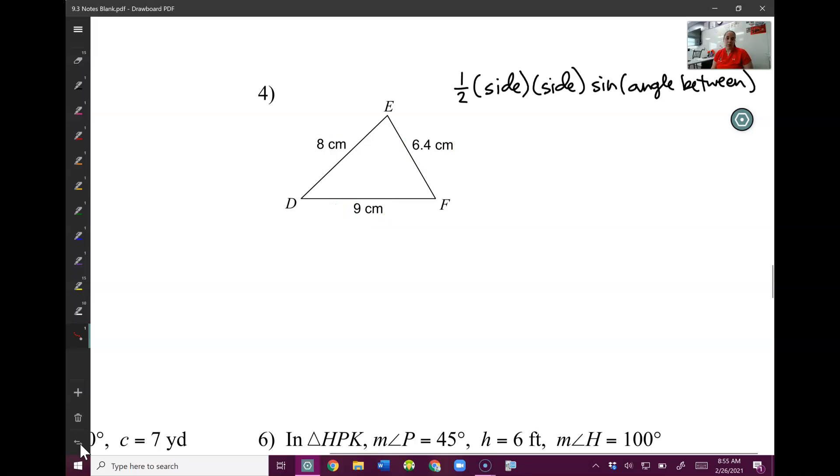Anytime you have all three sides, that should immediately tell you this is a law of cosines problem. We remember if law of cosines has side, side, side, we always solve for the biggest angle first. The biggest angle is always across from the biggest side. There's my biggest side, so I'm going to solve for capital E.